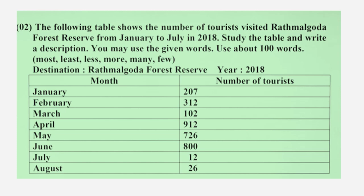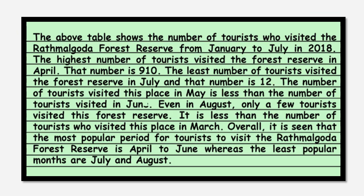Radmalangoda Forest Reserve, year 2018. Here you can see the month and number of tourists from January to August. The above table shows the number of tourists who visited the Radmalangoda Forest Reserve from January to July in 2018. The highest number of tourists visited the forest reserve in April — that number is 910. The least number of tourists visited the forest reserve in July, and that number is 12.